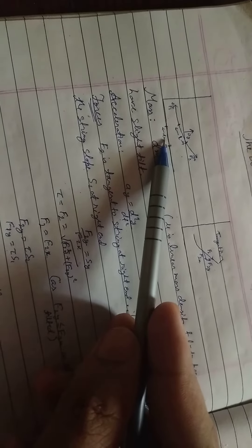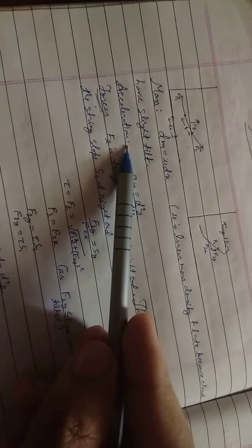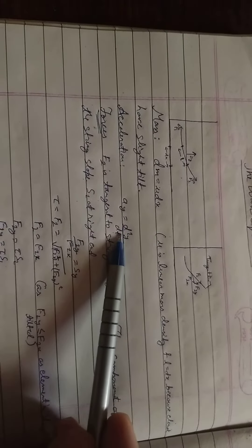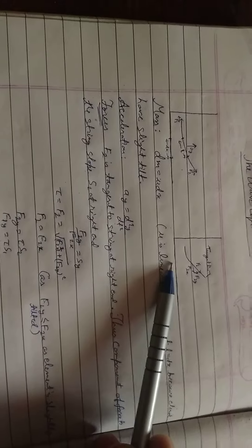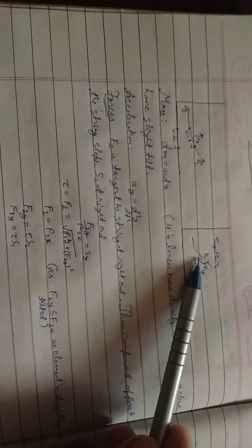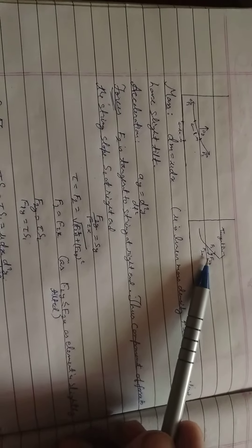Acceleration a_y is equal to d square y by dt square. This is the f2 component along the x-axis, f2x, and along the y-axis is f2y. f2y is shorter than f2x because this line is slightly tilted.